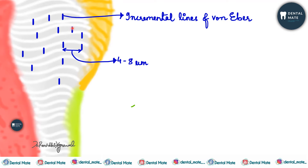They correspond to the incremental lines in the enamel and bone. They are basically representing the daily rhythmic recurrent deposition of dentine matrix, as well as the hesitation in the daily formative process — meaning the rhythmic deposition of the dentine matrix is represented, as well as the hesitation or problems in the formation of the matrix.